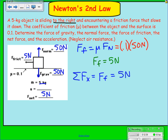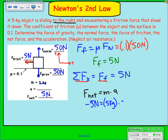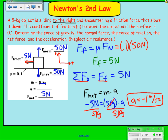Finally, solving for acceleration using Newton's second law: force net equals mass times acceleration. My positive direction is up and to the right, and since friction points left, I plug in negative 5 newtons. That equals 5 kilograms times acceleration. Dividing both sides by 5 kilograms gives acceleration equals negative 1 meter per second squared. Notice the acceleration is negative because the net force is negative.